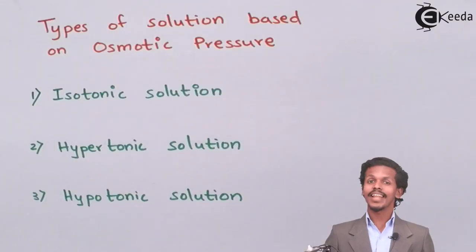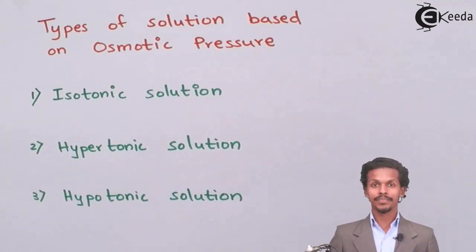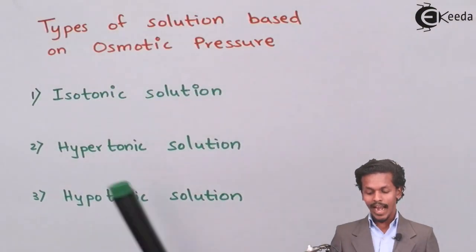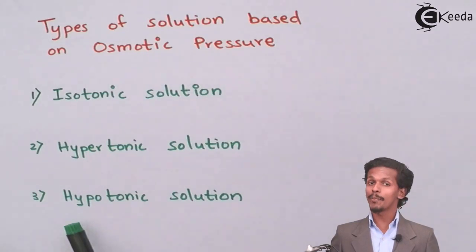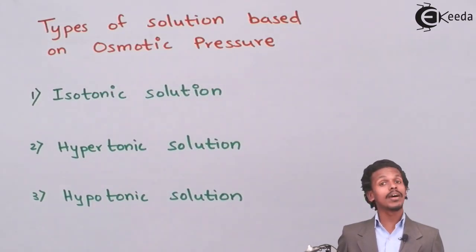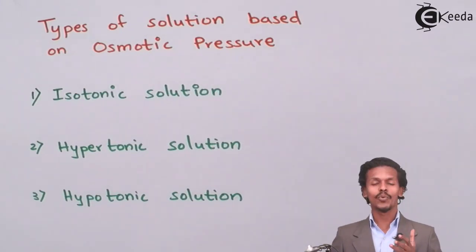There are three types of solutions based on osmotic pressure. The first one is isotonic solution, the second is hypertonic solution, and the third is hypotonic solution. Now we are going to study each of them one by one with a few examples.